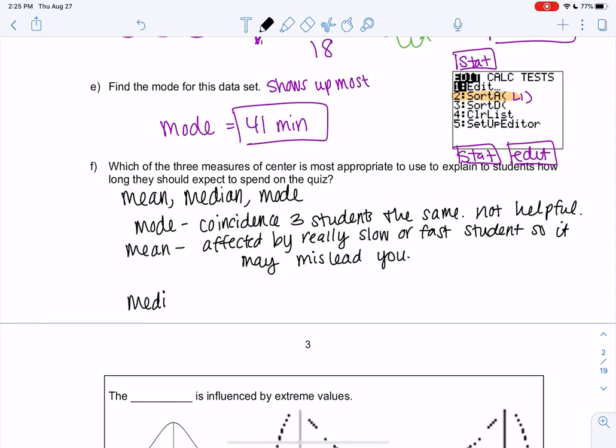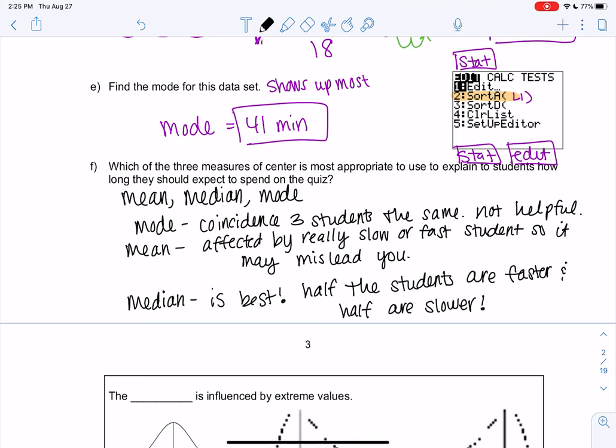So you're probably used to using the average most of the time. But it turns out the median is often a lot more common. And the reason people like median the best is it tells me half the students were faster, half the students were slower. And maybe you have a good idea if you're faster or slower than the class in general. So median is best. Half the students are faster, half are slower. Cool. All right. I'll see you in the next video.